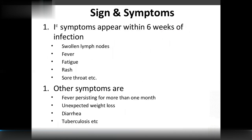Signs and symptoms: first symptoms appear within 6 weeks of infection — swollen lymph nodes, fever, fatigue, rash, and sore throat. Other symptoms include fever persisting for more than one month, unexpected weight loss, diarrhea, and tuberculosis.